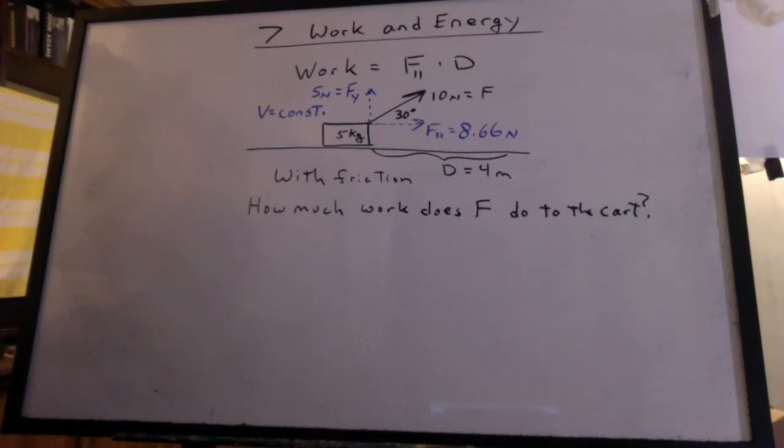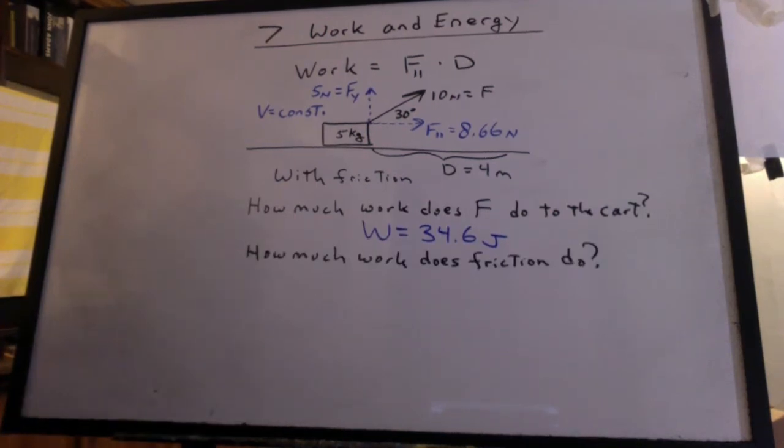Let's get rid of the wheels, and now we have friction. We have a block, and it's going to slide at a constant velocity in this case. How much work does F do to the cart? It's still 34.6 joules, but now we can ask, how much work does friction do to the cart?